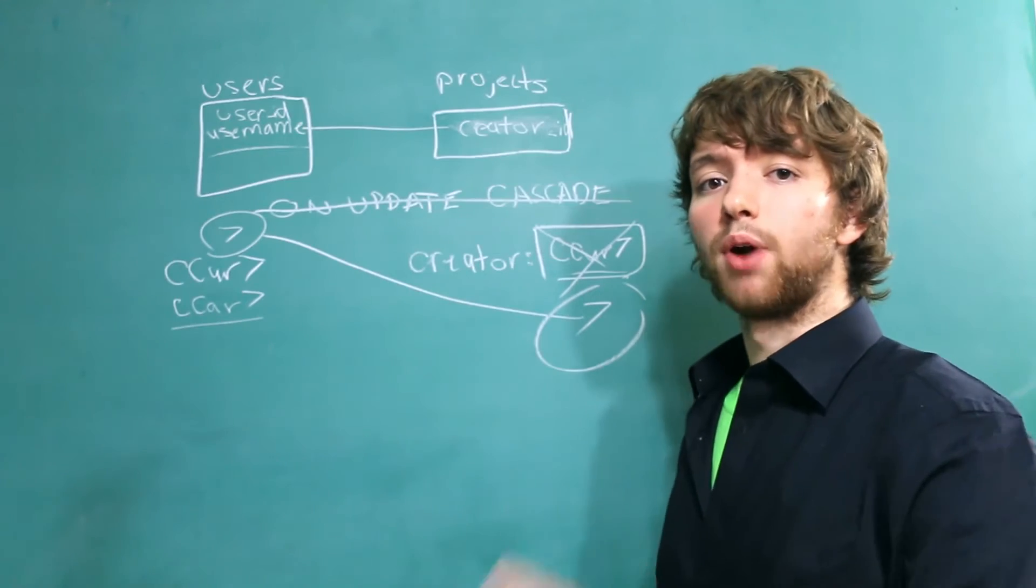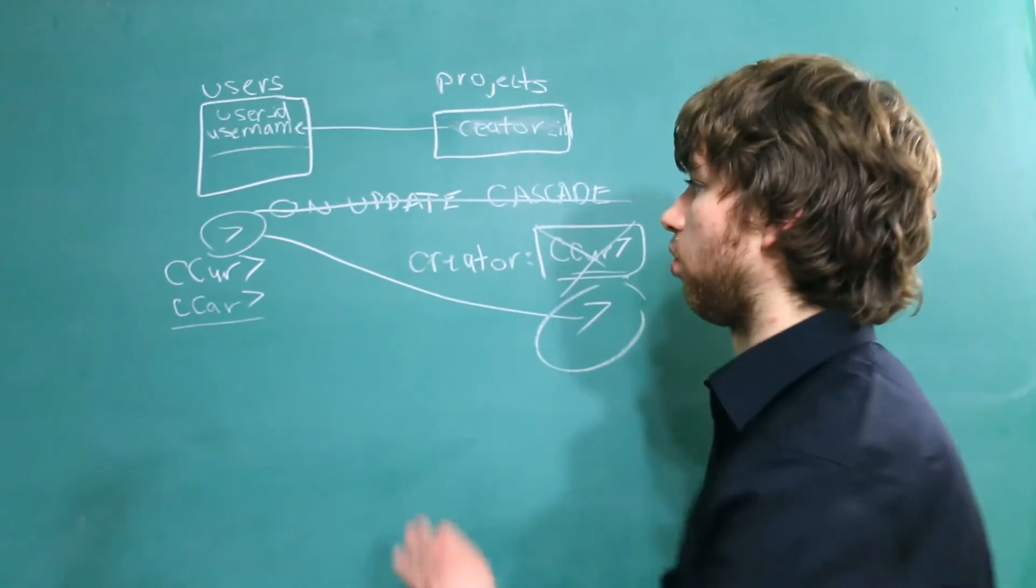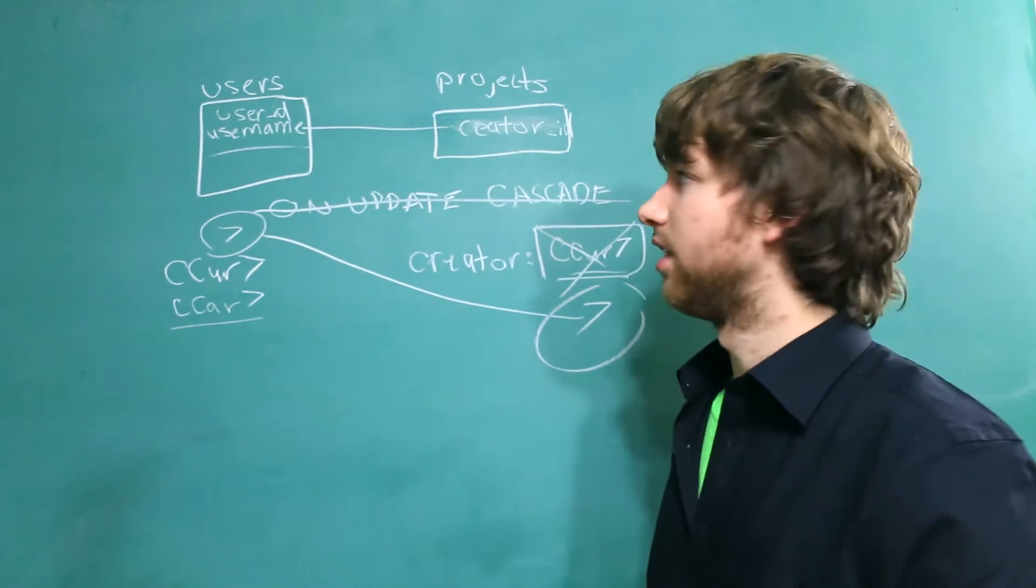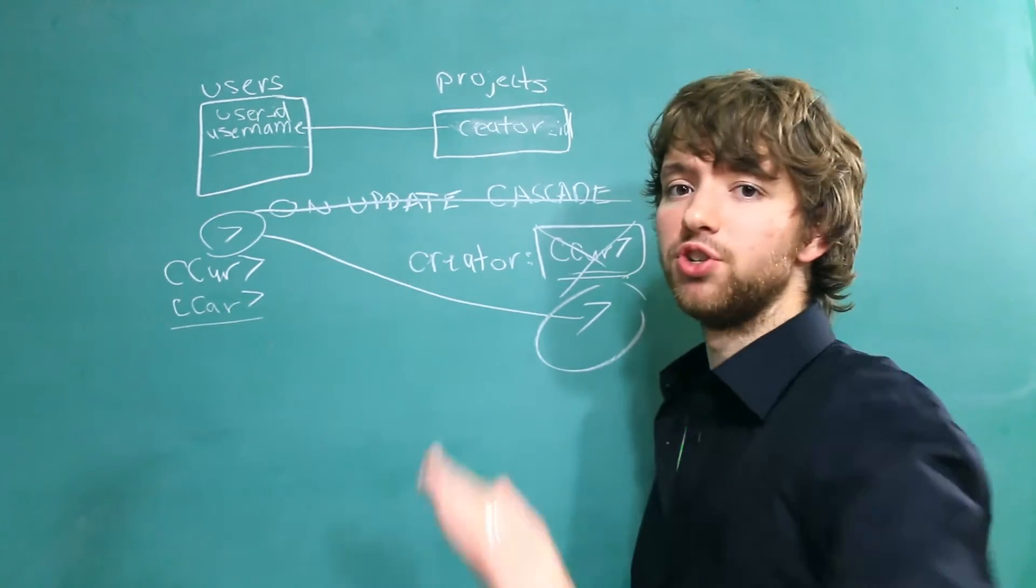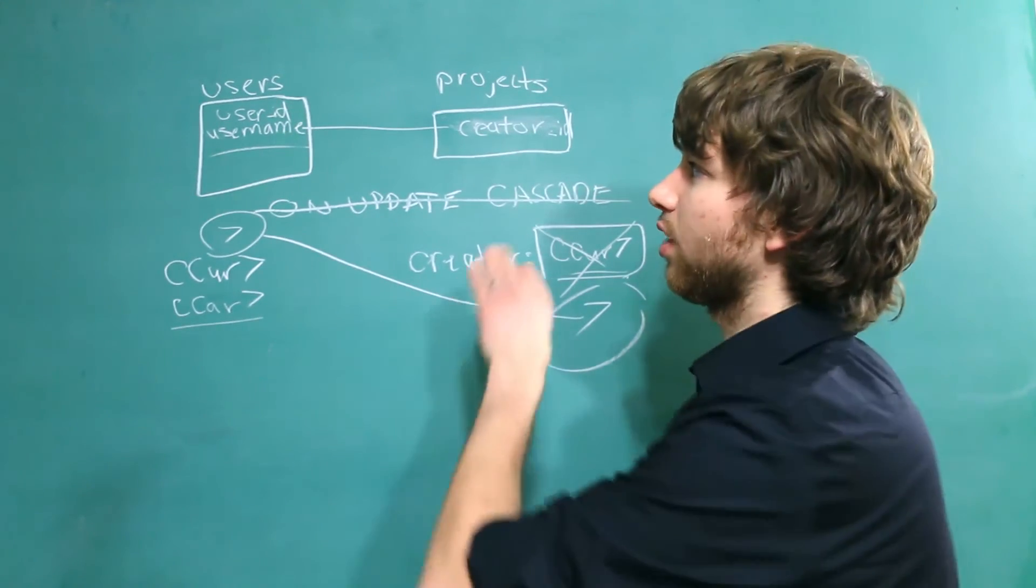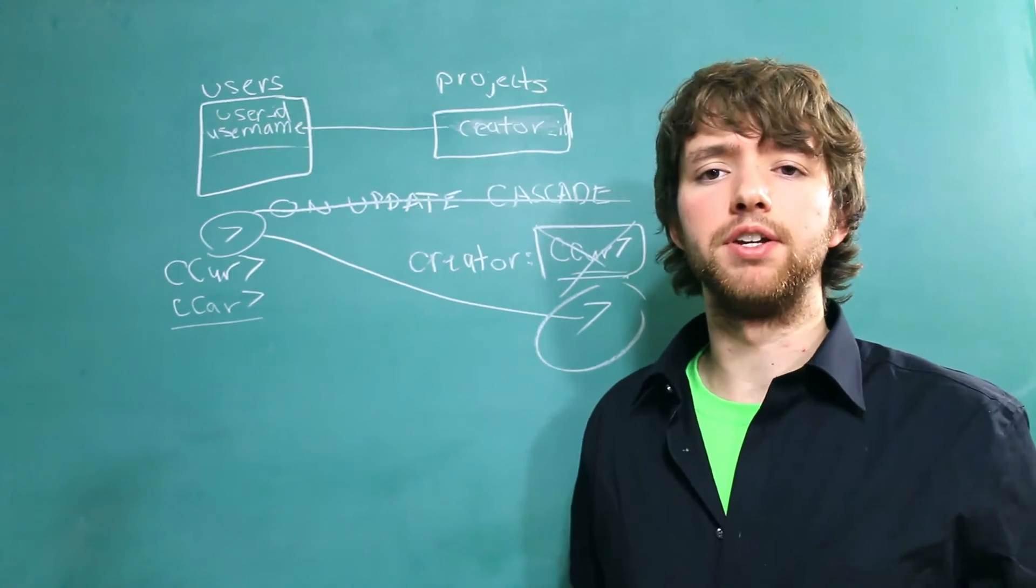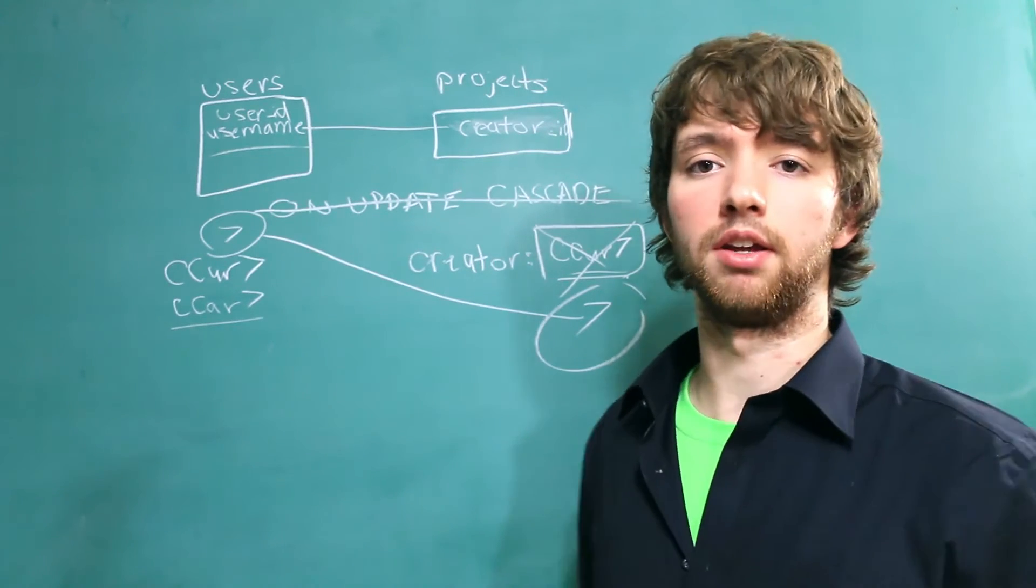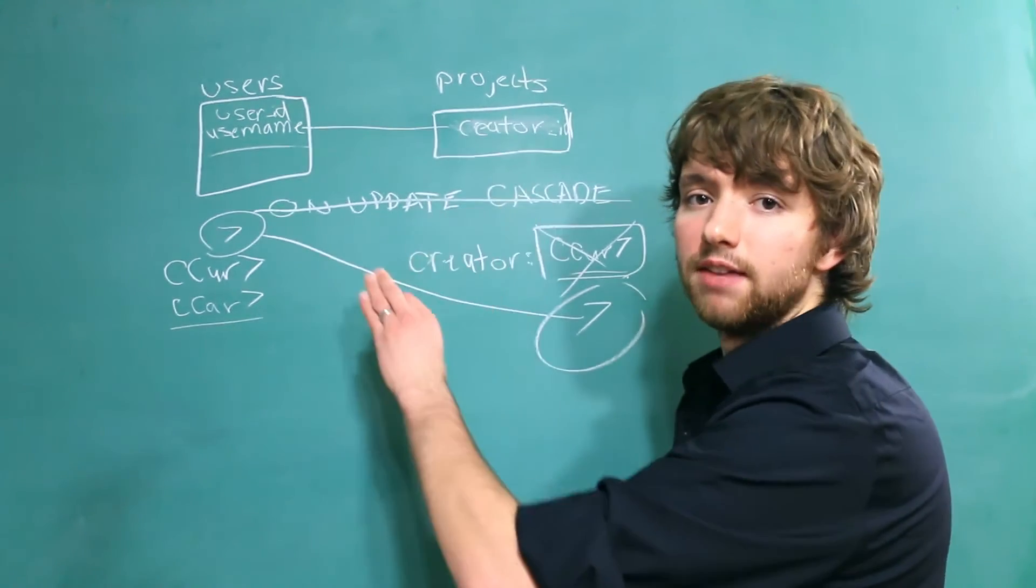As a rule, primary keys should never change. So don't make a primary key that's going to change. The username, if you can change it, it would not be a good primary key. The user ID is perfect because it's just an arbitrary number that the database picks. It doesn't have any real world meaning. So primary keys never change.